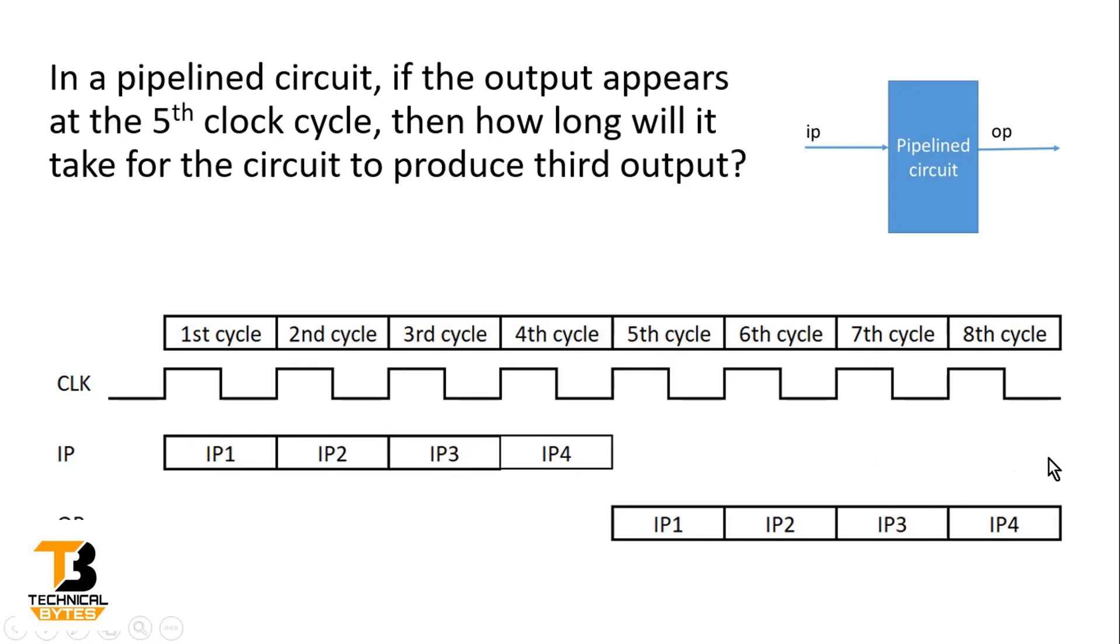Now, as stated in the problem statement, the first input reaches the output in fifth clock cycle. That means second will reach in the sixth clock cycle and third input will reach at the output in the seventh clock cycle. So seventh clock cycle is the correct answer, and many people answered it correctly in the comment section.